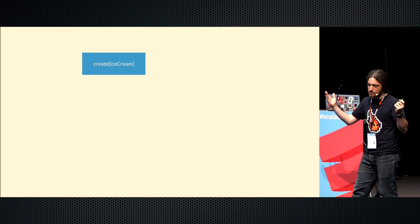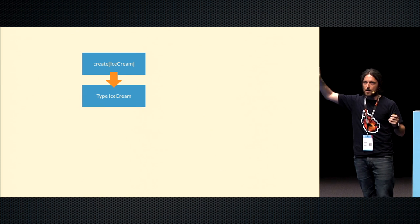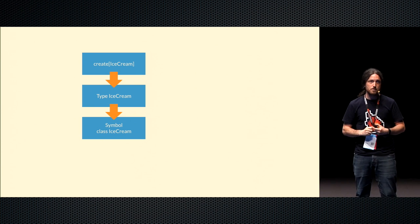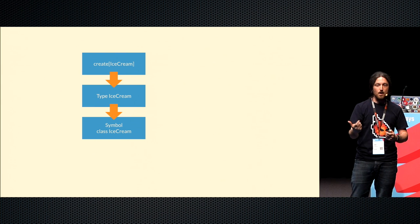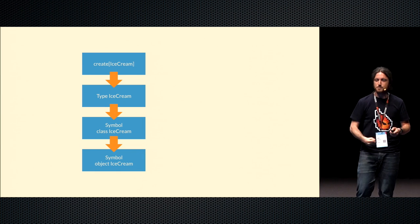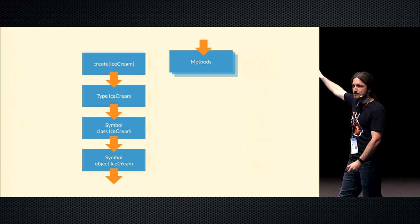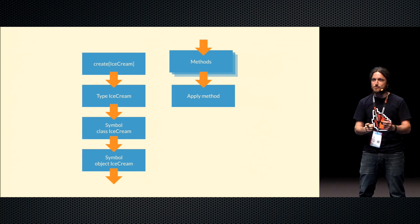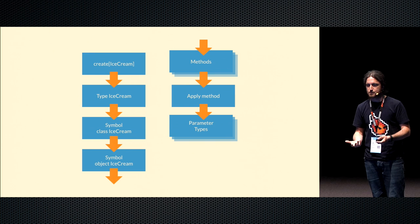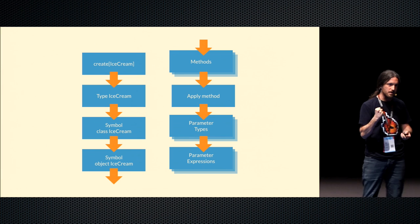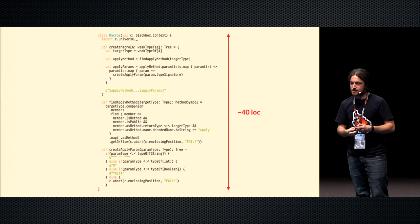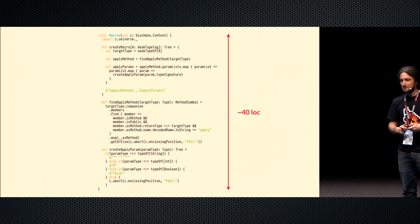These are the steps we're going to go through. We start with our macro — the code the user writes. Then we look up our type, that's a thing inside the macro API. From that we look up a thing called a symbol. A symbol represents a definition, so in this case it'll be like `class IceCream`. That gives us all sorts of information: what the constructors look like, what the fields look like, and what the companion object looks like. So we go to the symbol for the companion object, then look at all the methods for the companion object, and pick a method called `apply`. We look for the string `apply` in the method name. From there we figure out all the parameter types, then generate expressions for each parameter type, and we're done. The code is about 40 lines.